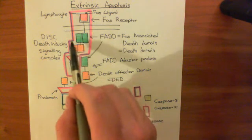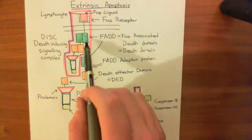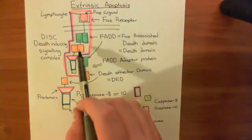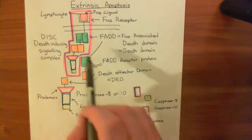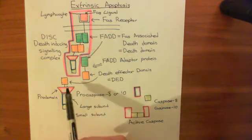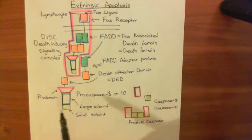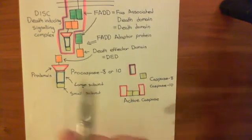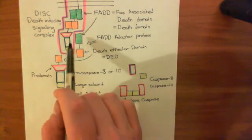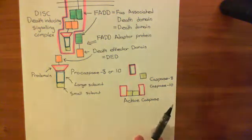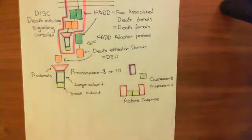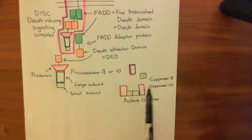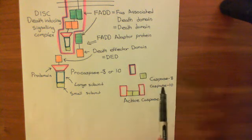The FAD adapter protein comes in and forms a complex with the FAS receptor. The FAD adapter protein then has another domain known as the death effector domain in orange, which can then associate with a death effector domain on either pro-caspase 8 or 10. This results in the large subunit and small subunit cleaving off from this death-inducing signaling complex, or DISC, and then combining with other large and small subunits to create either active caspase 8 enzymes or active caspase 10 enzymes.